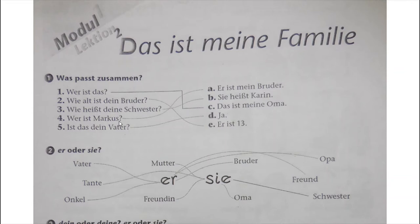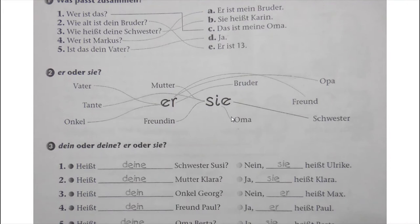Then number 5: Ist das dein Vater? This is an example of a yes/no question - ja/nein Frage - because the verb is at the first position. Ist das dein Vater? The reply is simply: Ja.